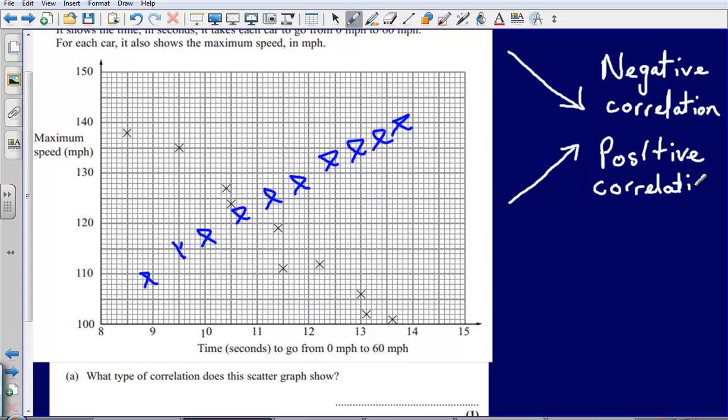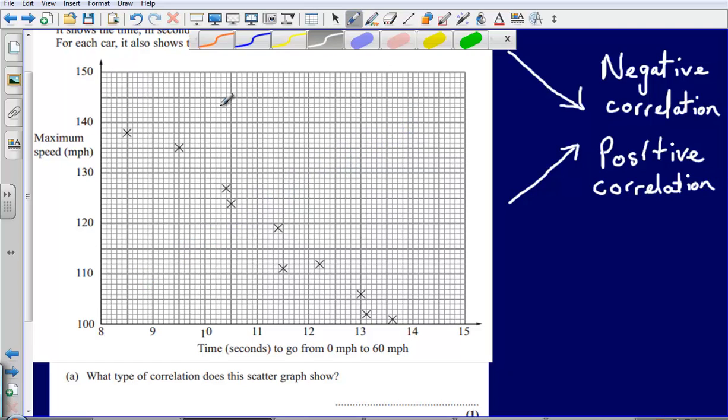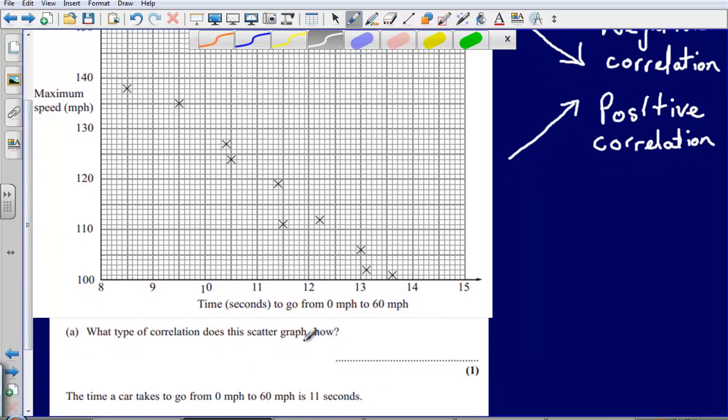So in this example here we can see straight away that we have a negative correlation because each of our points on our graph are going downwards. What type of correlation does this scatter graph show? We can say that it is a negative correlation.